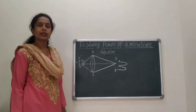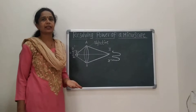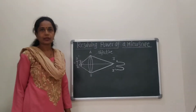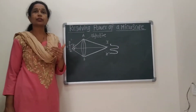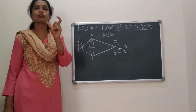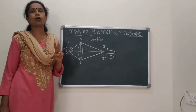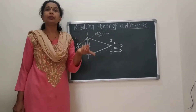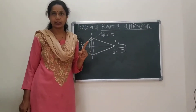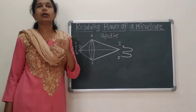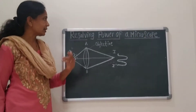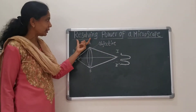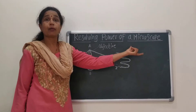Hello students, we are continuing the same point of the previous lecture which is the Resolving Power of an Optical Instrument. Resolving power is defined as the small visual angle between two point objects at which they can be separated, called the limit of resolution. The reciprocal of the limit of resolution is called the resolving power of an optical instrument. Let us define the Resolving Power of a Microscope.